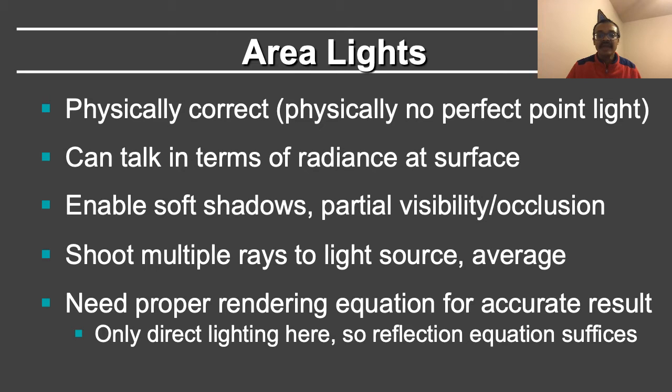We will be using area light sources in this lecture. In earlier ray tracing assignments, you used point or directional light sources. However, there are no point light sources in the real world. The physically accurate lights are area lights. In this case, you can actually associate a radiance value with the area light, and you can talk in terms of the radiance at the surface.